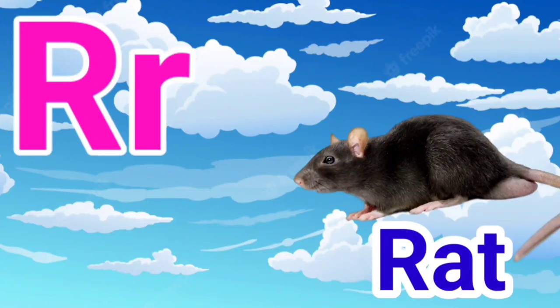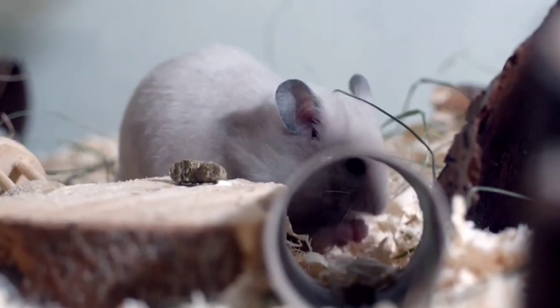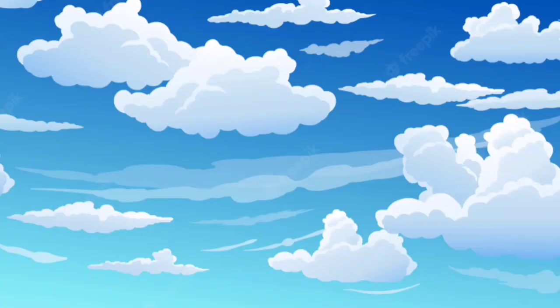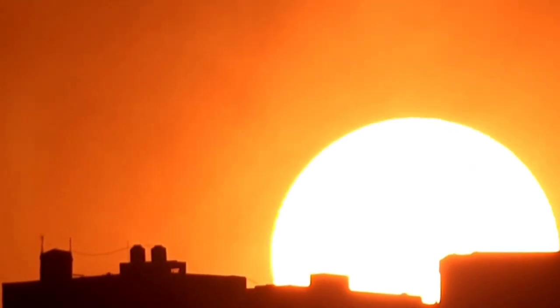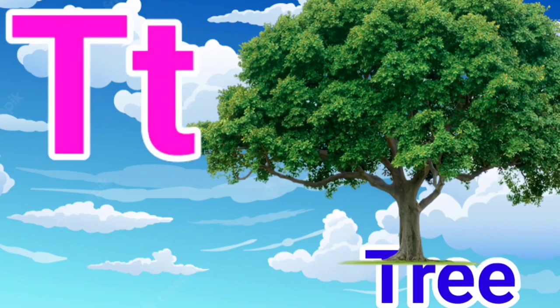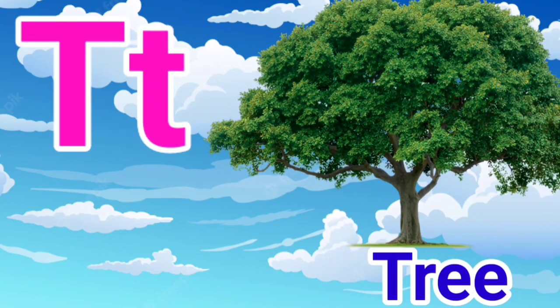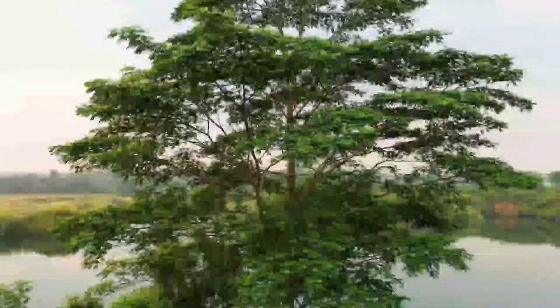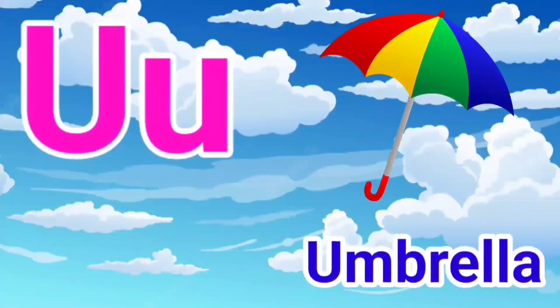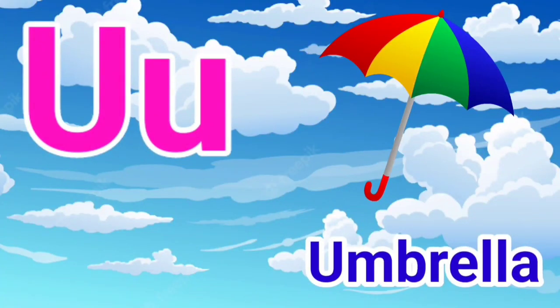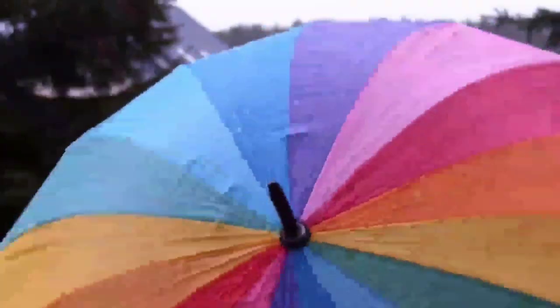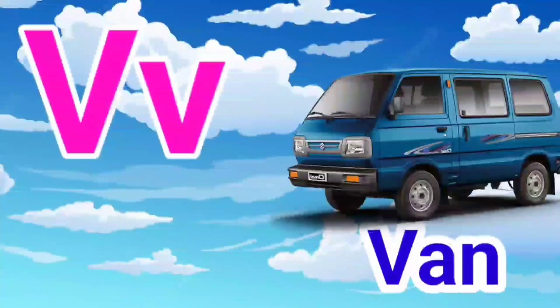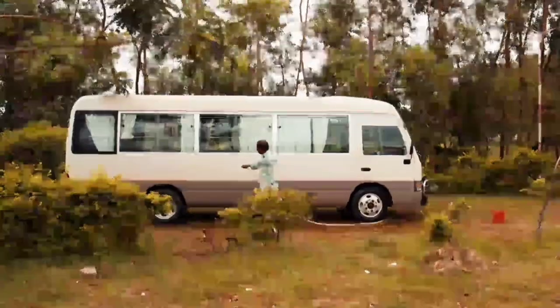R for Rat, S for Sun, T for Tree, U for Umbrella, V for Van.